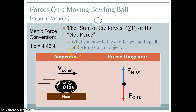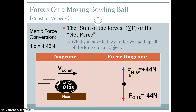Whenever we measure force in the metric system we use a unit called the newton. One pound is equal to about 4.45 newtons, which means a newton is about a quarter of a pound. So if we have a 10-pound bowling ball, that makes the force of gravity about 44.5 or 44 newtons. We say the force of gravity is negative 44 newtons because gravity points down, and down by definition is the negative direction. The normal force is the same size in the opposite direction, so it's positive 44 newtons.